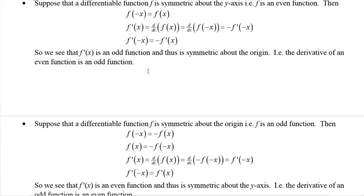Similarly, if we take a differentiable function that's symmetric about the origin — in other words an odd function — then f of minus x is the opposite of f of x. So f of x is the opposite of f of minus x. Taking the derivative: f prime of x is the derivative of minus f of minus x. That's minus out front, times the derivative of f of minus x, which is f prime of minus x, times the derivative of the inside which is minus 1. That minus 1 cancels the minus out front, giving us f prime of minus x equals f prime of x.